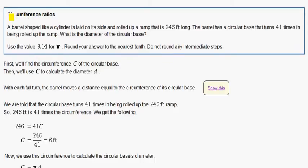In this problem, we are working with circumference ratios. A barrel shaped like a cylinder is laid on its side and rolled up a ramp that is 246 feet long. The barrel has a circular base that turns 41 times in being rolled up the ramp. What is the diameter of the circular base?